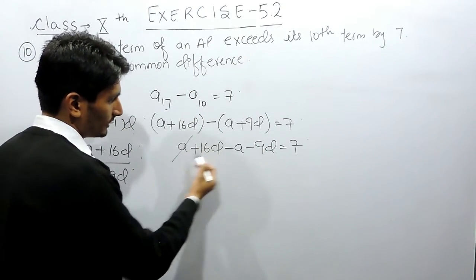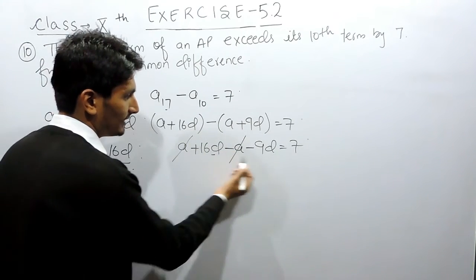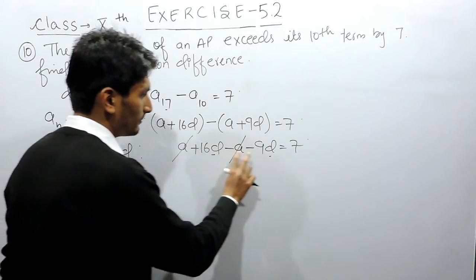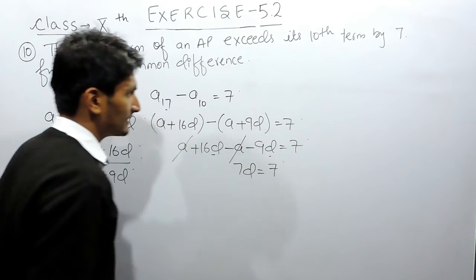Now we can solve this linear equation. These like terms cancel out. 16 minus 9 is 7D, and this equals 7.